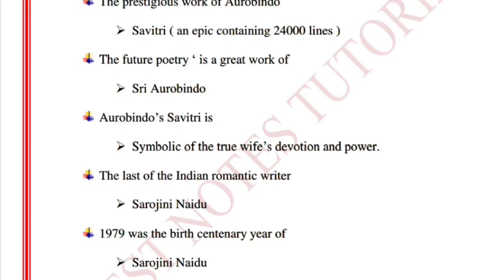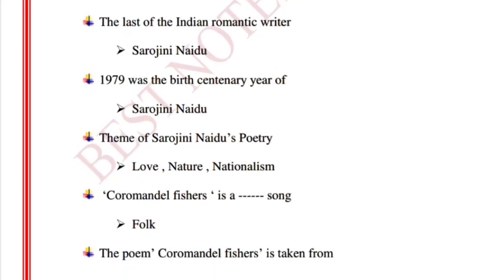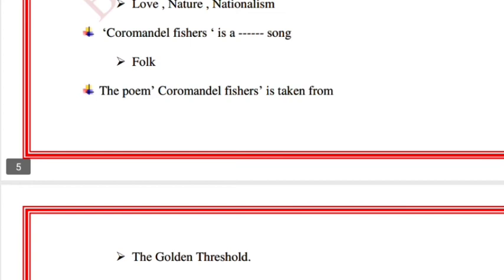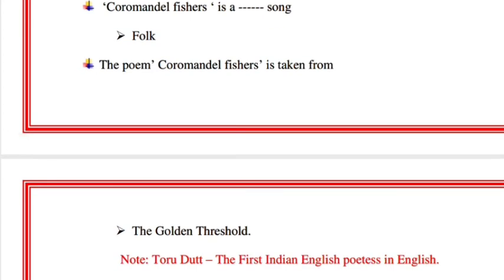The last of the Indian romantic writers is Sarojini Naidu. 1979 was the birth centenary year of Sarojini Naidu. The themes of her poetry are love, nature, and nationalism. 'Coromandel Fisher' is a folk song taken from 'The Golden Threshold.'